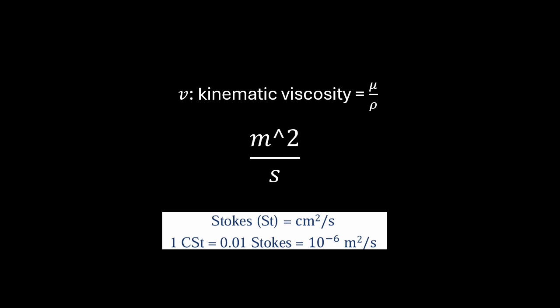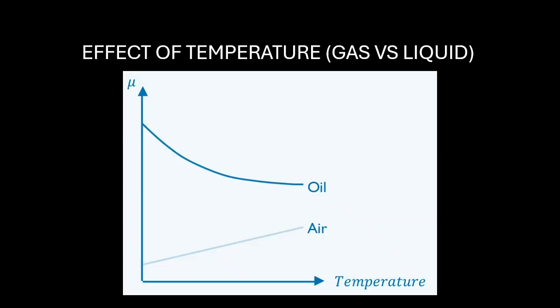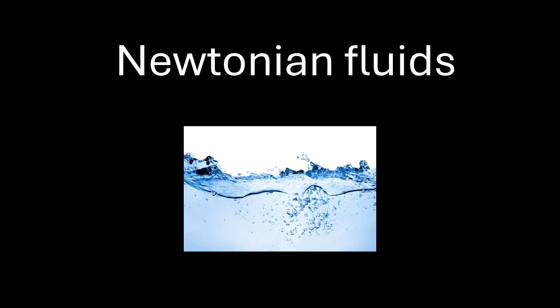Also, you have kinematic viscosity, which is equal to mu over rho. And the effect of temperature on gas and liquid, which is like you see here. Air, as increasing the temperature, the viscosity will be increased. While increasing the temperature of liquid as oil, the viscosity will be decreased. And you have Newtonian fluids, which is constant viscosity, like water and air. While non-Newtonian fluids, which is viscosity changes, like ketchup.